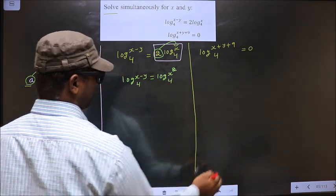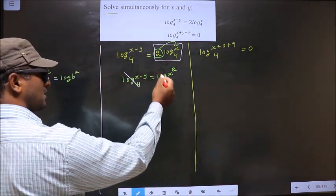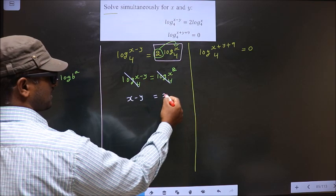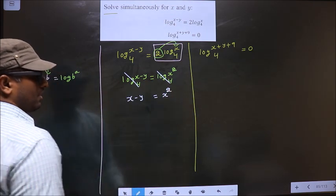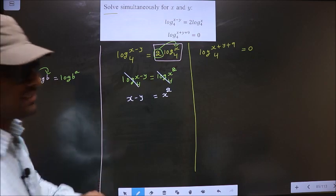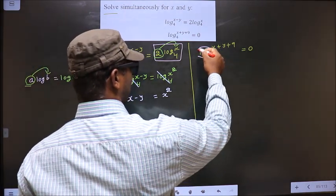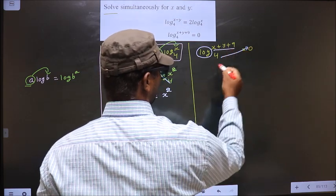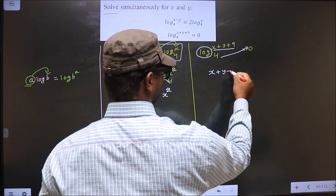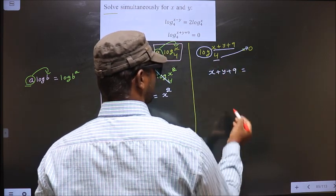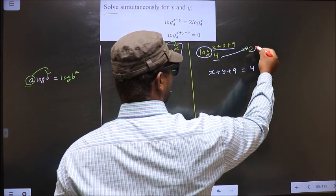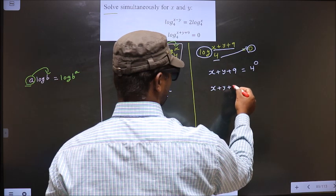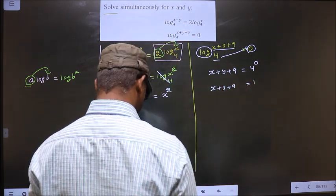Now log base 4 cancels out on both sides, leaving x - y = x². For the second equation, we remove the log. Whatever is here stays on the same side, so we get 4⁰ = x + y + 9, which equals 1.